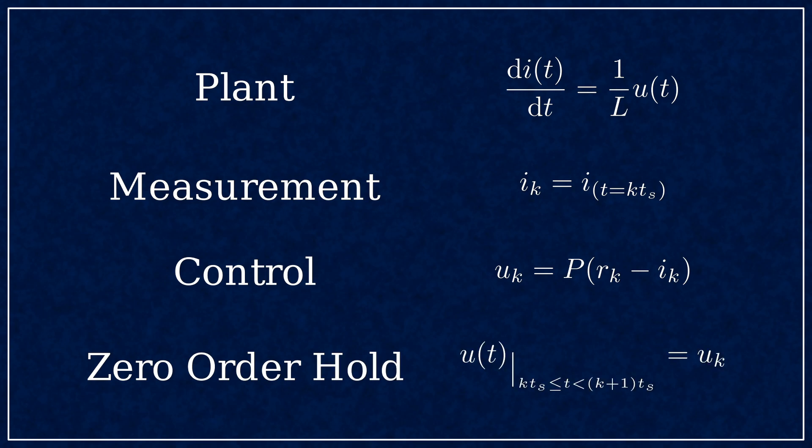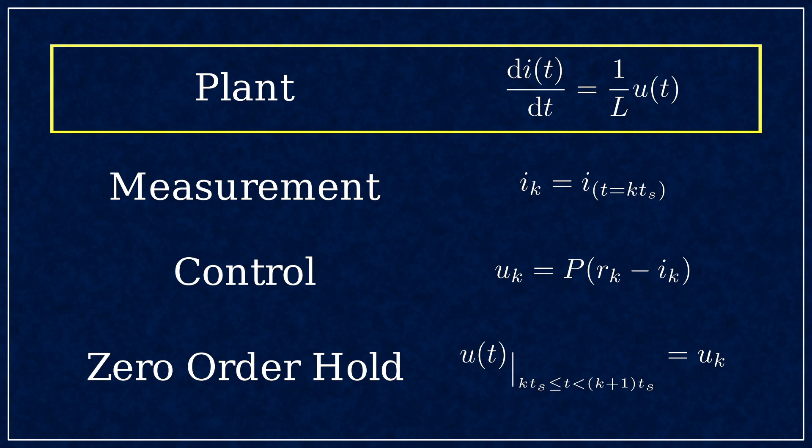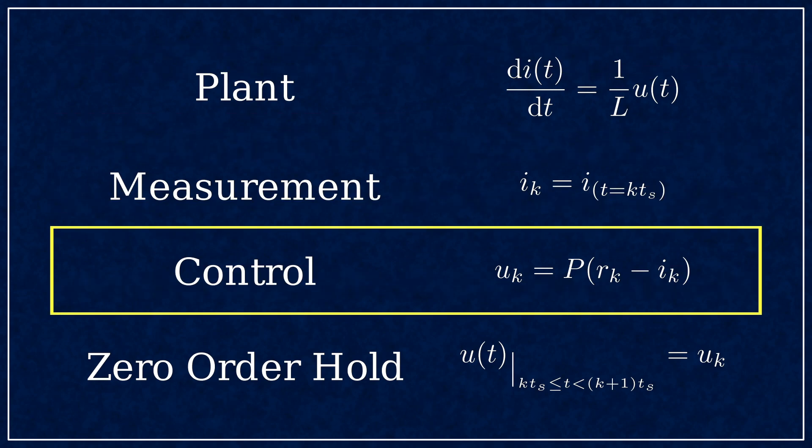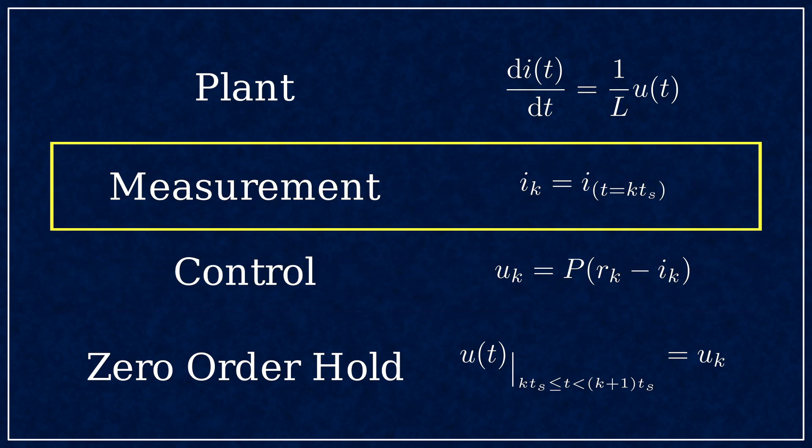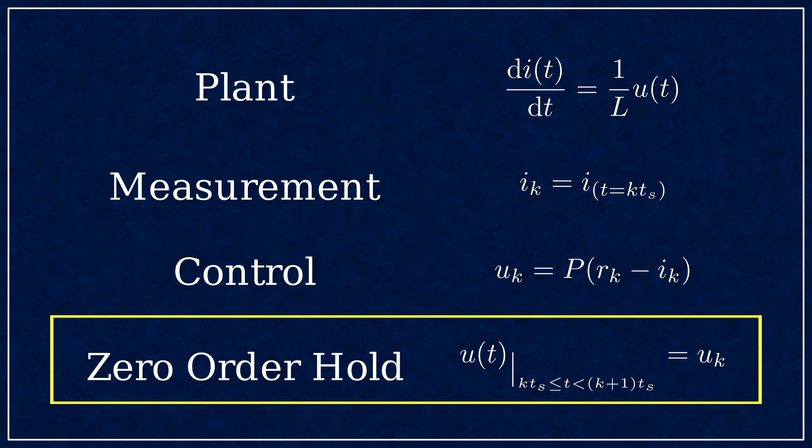These are the equations for this system. For the plant you can write that the derivative of the current is proportional to the voltage. The controller in discrete time is P times the error. The measurement IK equals the current signal evaluated at K times the sample time. The zero order hold means the output voltage is constant as long as it's between sample points and it equals the last available output UK.